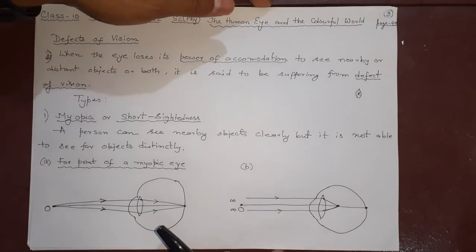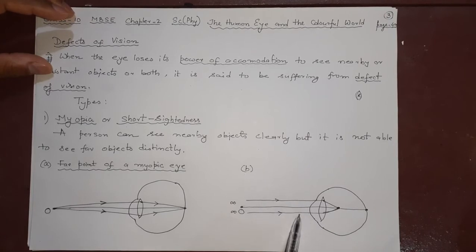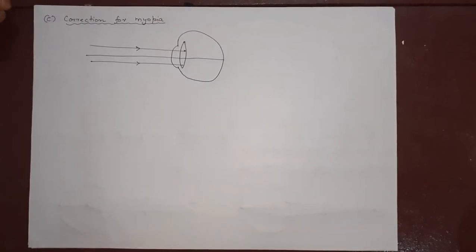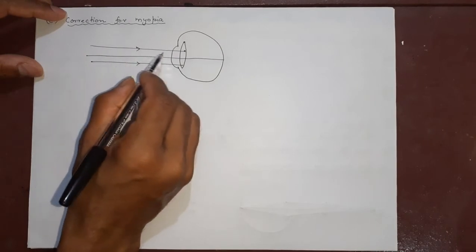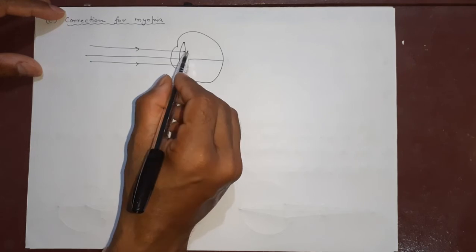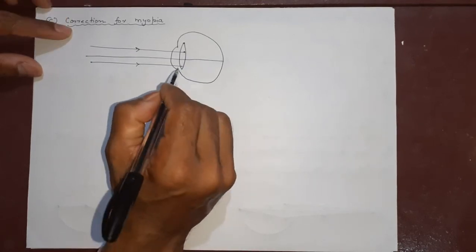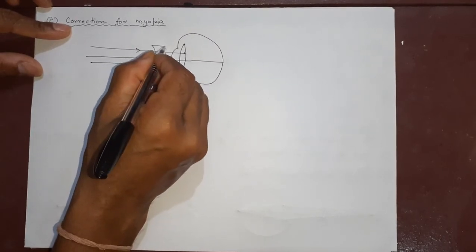Now in the third diagram I will show how to correct it. This is the eye. We will put some glass here — a spectacle lens. For correction of the myopic eye, when the ray of light is coming from infinity, the eye lens is ready to converge it before the retina. But I will not allow it to do that — I will put one concave lens here, which is what you wear as specs.